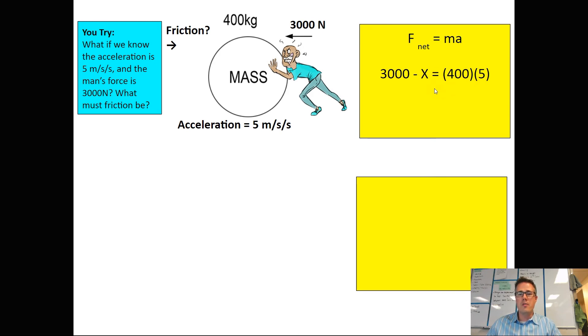When we simplify, we're going to get 3000 minus x equals 2000. We're going to need to subtract our 3000 from both sides, and we'll get negative x equals negative 1000.